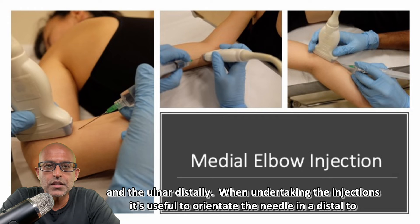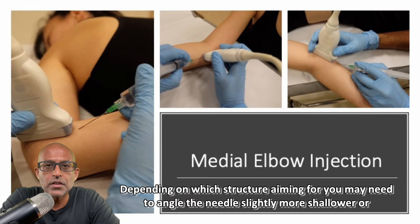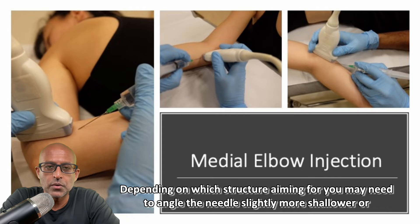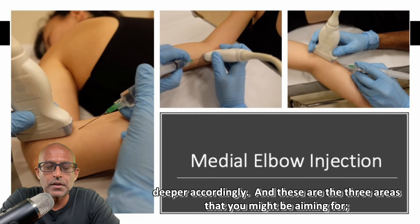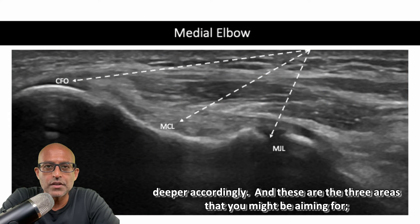When undertaking the injections, it's useful to orientate the needle in a distal to proximal orientation. Depending on which structure you're aiming for, you may need to angle the needle slightly more shallower or deeper accordingly. And these are the three areas that you might be aiming for.